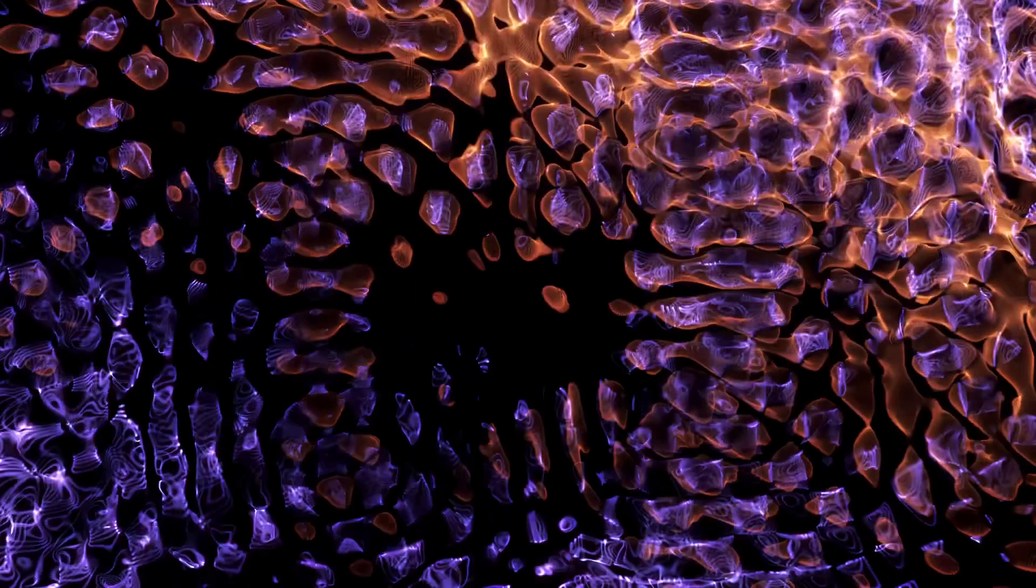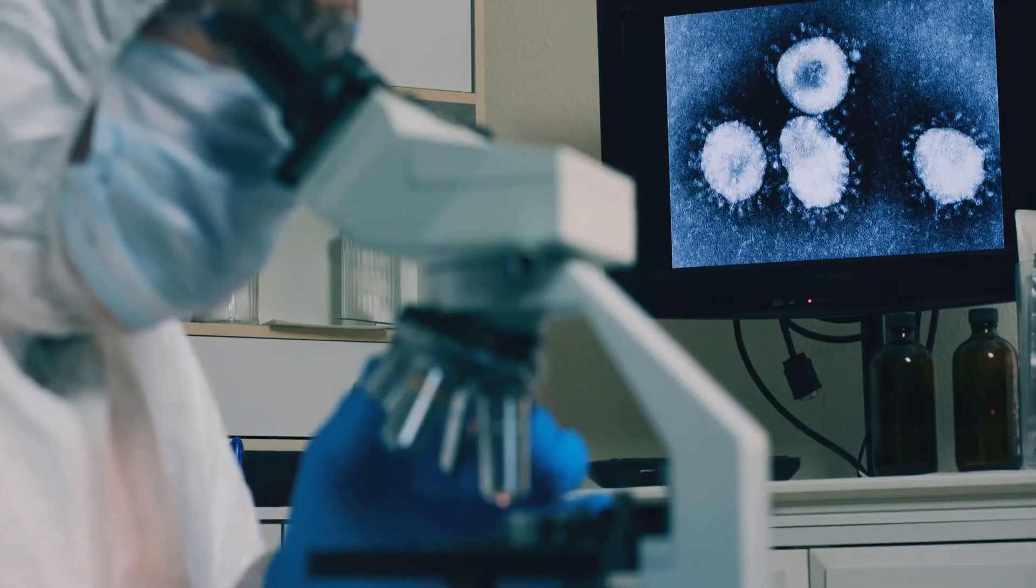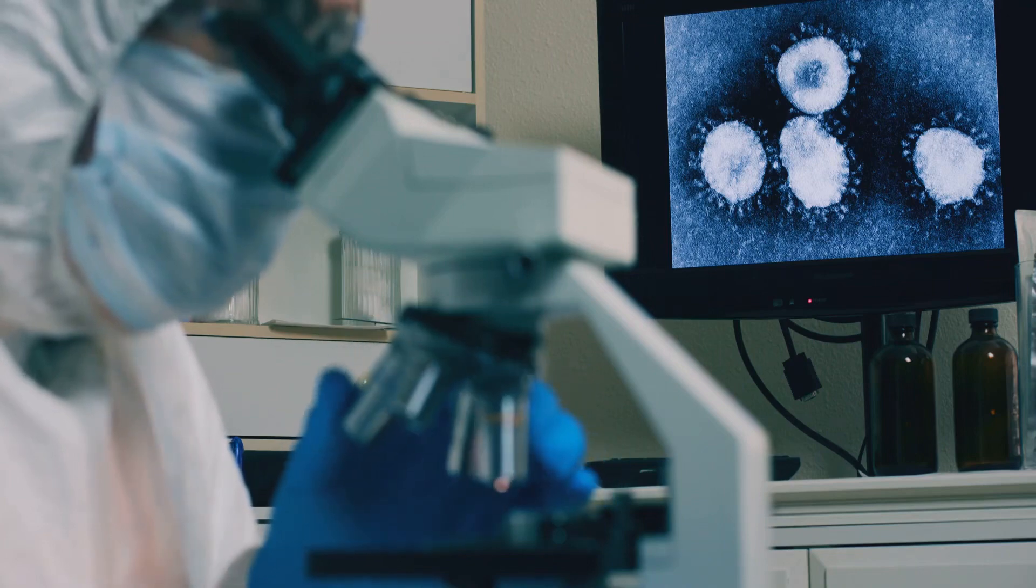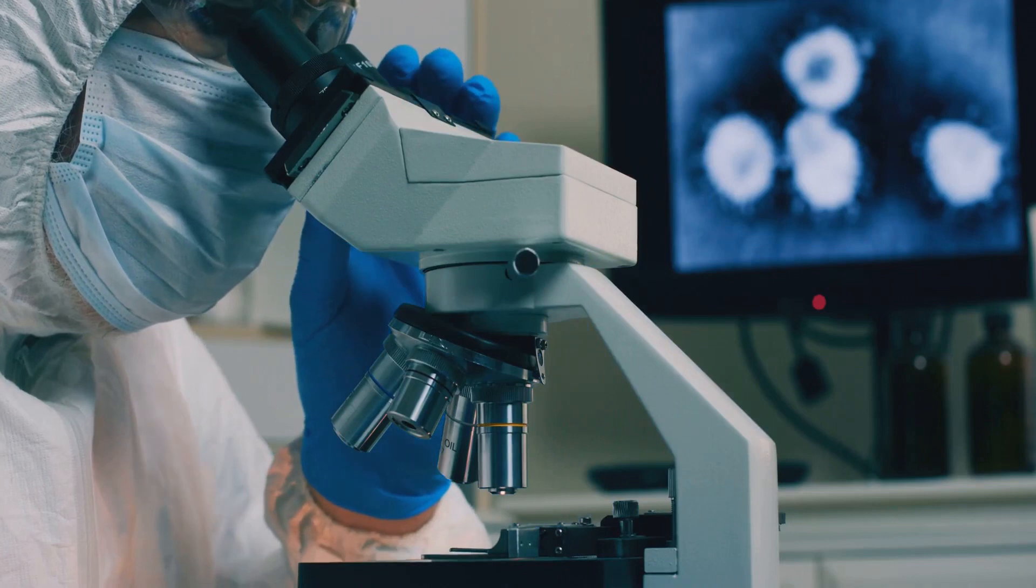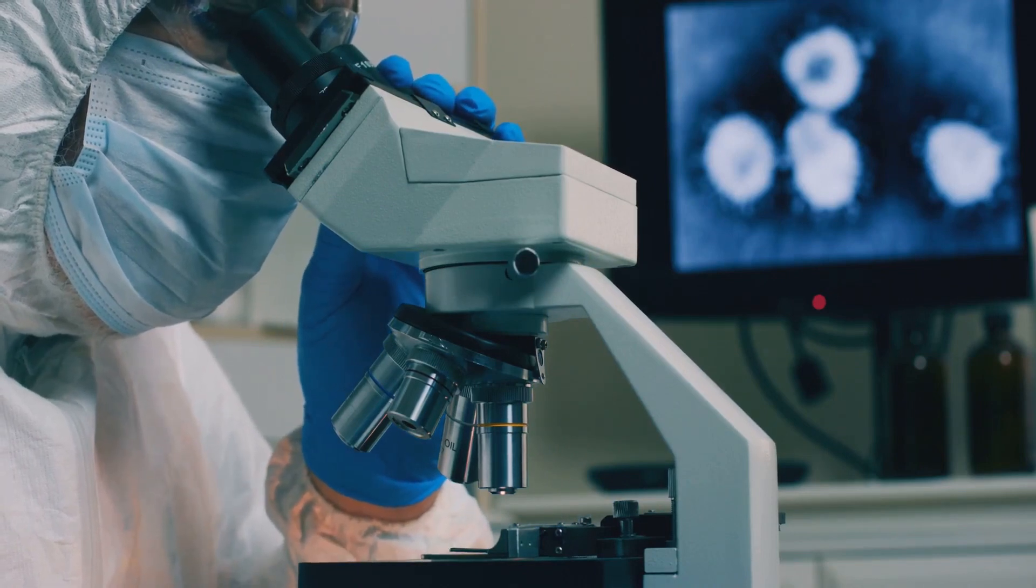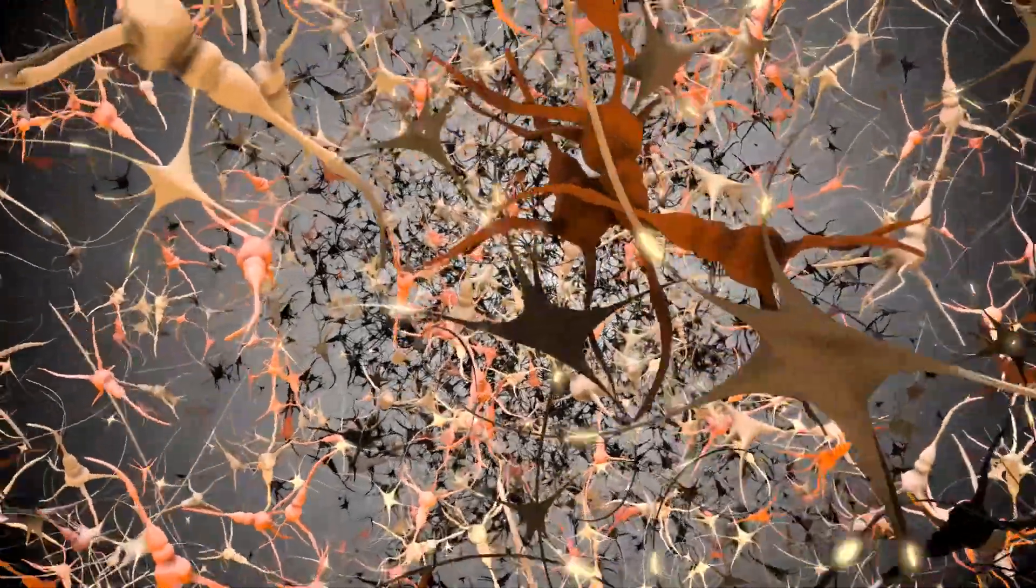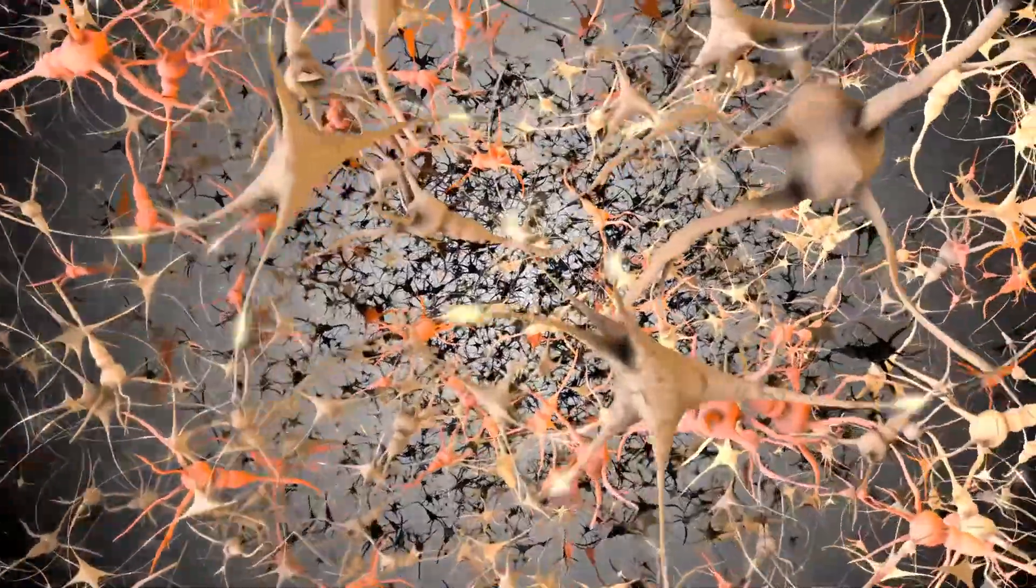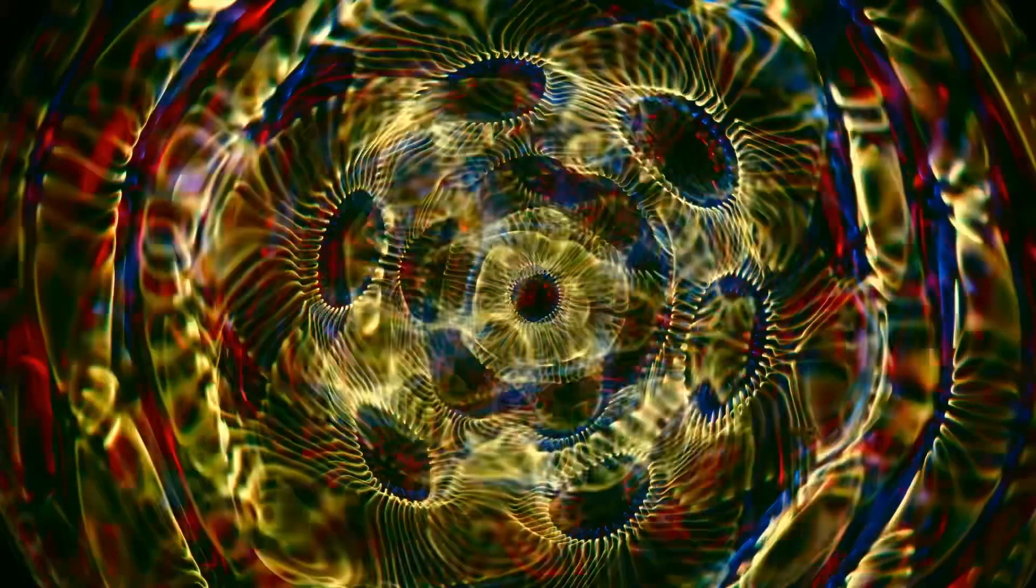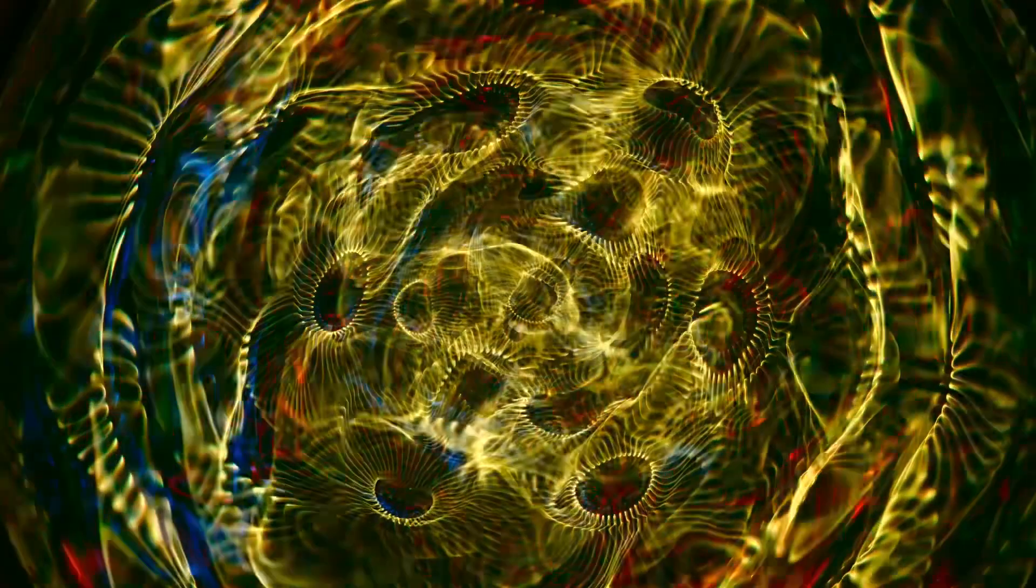The discovery of the ER was a landmark event in cell biology. In 1945, using the newly invented electron microscope, researchers Keith Porter, Albert Claude and Ernest Fulham peered deeper into the cell than ever before. They were the first to observe this intricate network of membranes, initially describing it as a lace-like reticulum. Little did they know their discovery would open up a whole new understanding of how cells function.